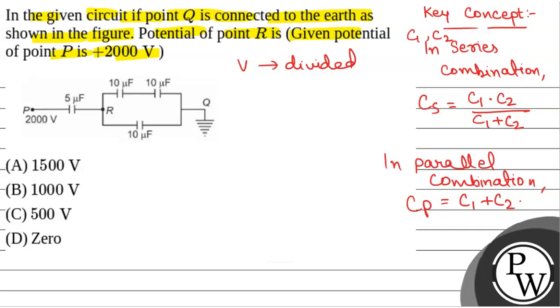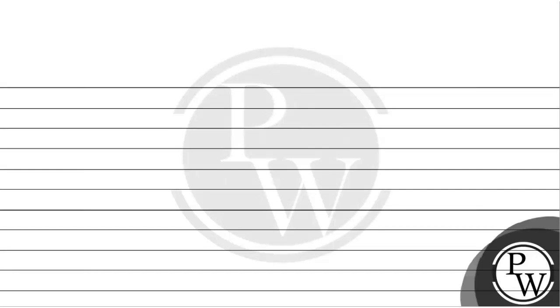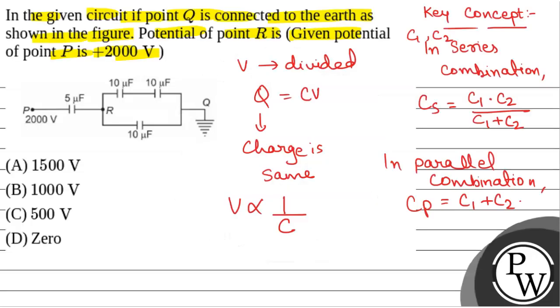In series combination charge is same. We know that Q equals C into V. So V is inversely proportional to C - voltage is inversely proportional to capacitance.